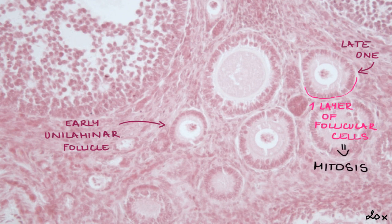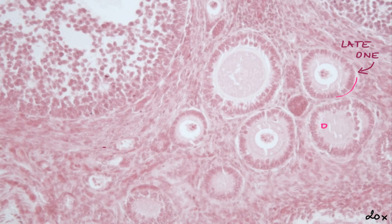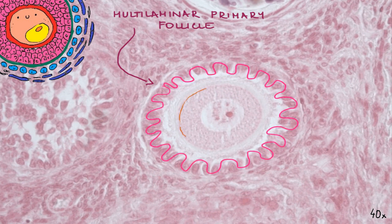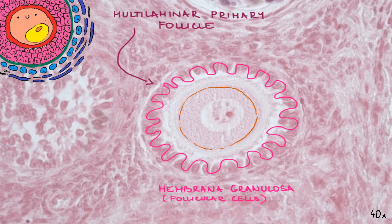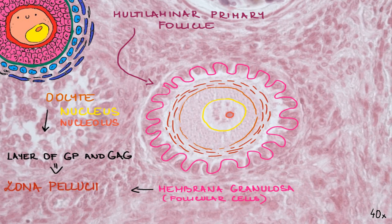Follicular cells divide mitotically, forming layers, and the follicle becomes a multilaminar primary follicle. The stratified epithelium around the oocyte is called the membrana granulosa; follicular cells can be called granulosa cells in more matured follicles. There is a nucleus and nucleolus clearly visible in the oocyte. Follicular cells produce a layer of glycoproteins and glycosaminoglycans which separates the oocyte and the follicular cells, called the zona pellucida. Both follicular cells and the oocyte's microvilli are in direct contact with the zona pellucida.